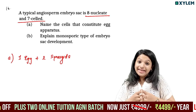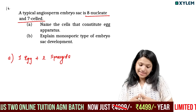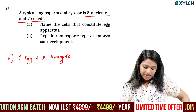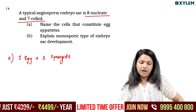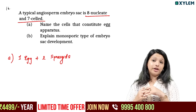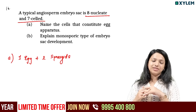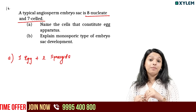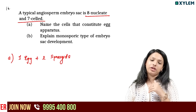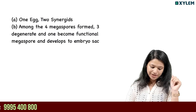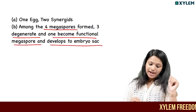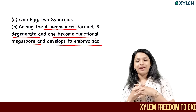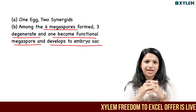How do we define the egg apparatus? Explain the monosporic type of embryo sac development. Among the 4 megaspores formed, 3 degenerate and 1 becomes the functional megaspore, which develops into the embryo sac. This is megaspore genesis.